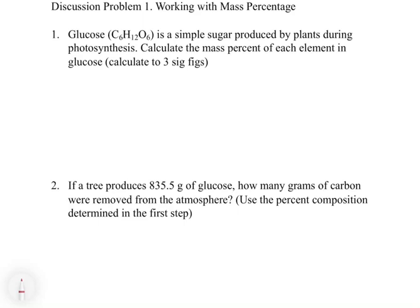Now for the discussion problem. Glucose is a simple sugar produced by plants during photosynthesis. We already calculated the mass percent of each element. The second question asks: if a tree produces 835.5 grams of glucose, how many grams of carbon were removed from the atmosphere? During photosynthesis, a plant takes CO₂ and combines it with water to make glucose. So we need to find how much carbon is in 835.5 grams of glucose — we have the total mass and want to find the mass of carbon.